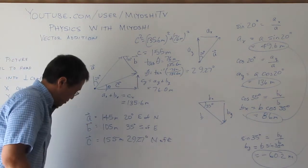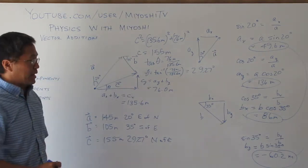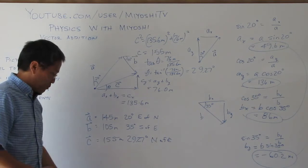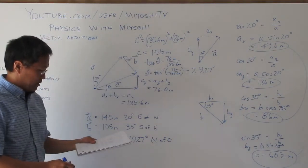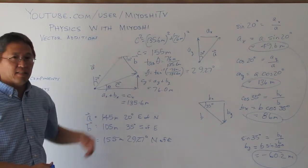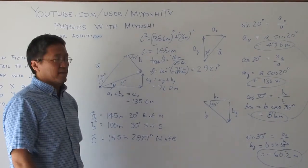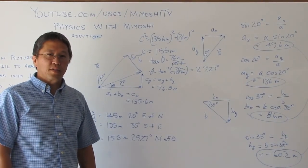So adding vectors that are not perpendicular to one another is just a matter of breaking it up into perpendicular components, adding the x components, adding the y components, like we did over here. And then finding the resultant the same way we did with perpendicular vectors. We'll do a little bit more of these at a later time. Thanks for tuning in to Physics with Miyoshi.